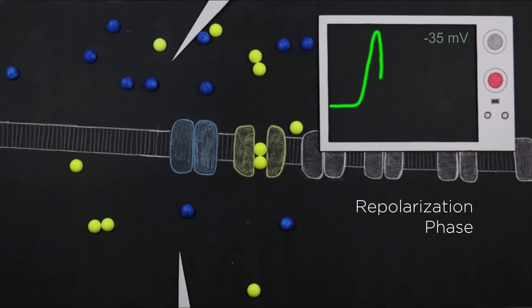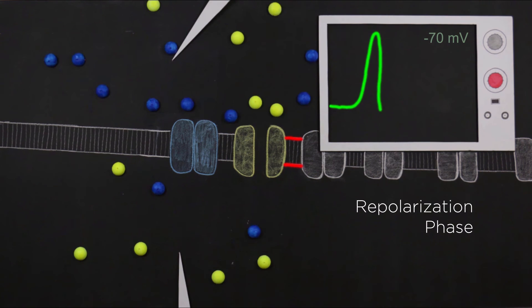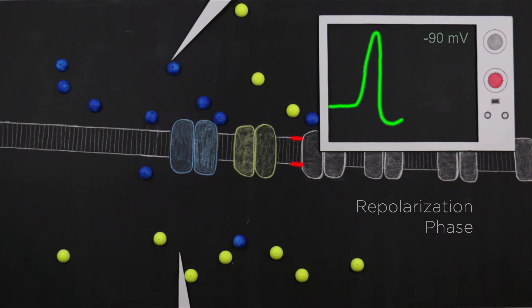Potassium continues to leak through the membrane until the cell is repolarized and the potassium channels begin to close. The closing of the potassium channels marks the end of the repolarization phase of the action potential.